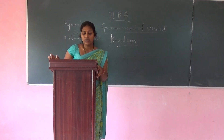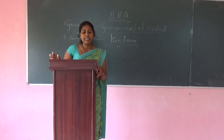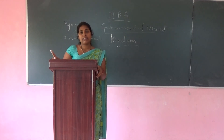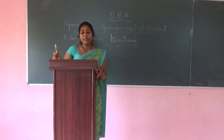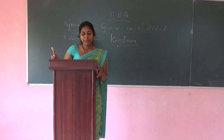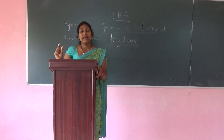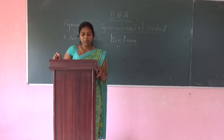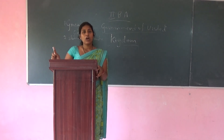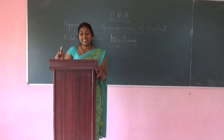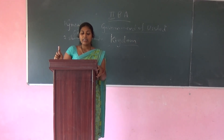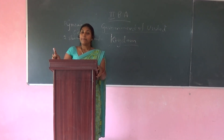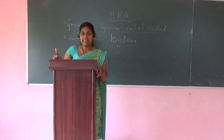The Parliament Acts of 1911 and 1949 established the supremacy of the House of Commons. Also included are the Habeas Corpus Act of 1679, the Public Order Act of 1936, and the Ministers of the Crown Act of 1937.